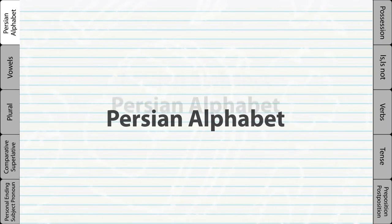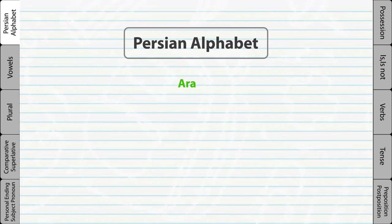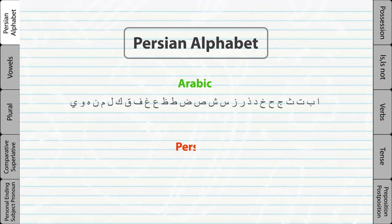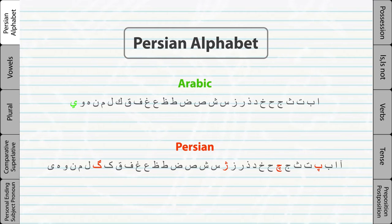Persian alphabet. The Persian alphabet is an Arabic-based script. The majority of the letters are the same as the Arabic alphabet, but Persian has a few more letters that are not available in the standard Arabic alphabet. Persian is an Indo-European language, which means it shares many similarities with European languages. Once you get past the Arabic-based alphabet, you will see many similarities with European languages.